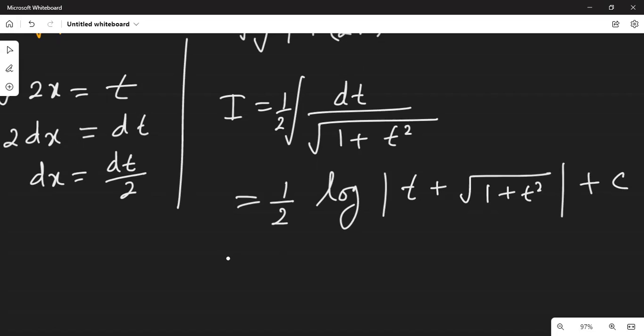Now we would like to substitute back the value of t. Our answer is going to be 1 over 2 log of t, which means 2x, plus square root of 1 plus t square, that is 1 plus 4x square, plus c. That's your answer.